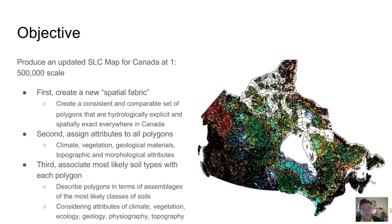Our primary objective was therefore to produce an updated Soil Landscapes map of Canada at 1 to 500,000 scale. We decided to do this in three stages. First, create a new spatial fabric. Second, assign environmental attributes to each polygon of the new spatial fabric. Third, associate the most likely soil type or soil types with each new polygon.